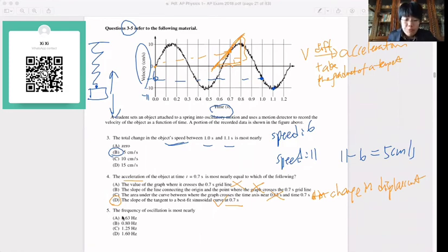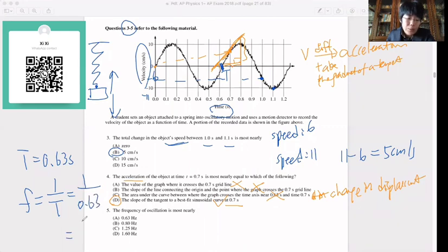Let's move on to question 5. The frequency of the oscillation is most nearly. We know this velocity and time. So the period here, period being the time taken to complete one oscillation, is going to be about 0.63 seconds. The frequency related to period is frequency equals 1 over period. That equals 1 over 0.63, so that's going to give us about 1.6 Hertz.